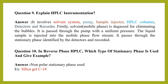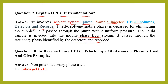Explain HPLC instrumentation. HPLC instrumentation involves a solvent system, a pump, a sample injector, HPLC columns, detectors, and recorders. The solvent is first degassed to eliminate bubbles, then passed through the pump at uniform pressure. The liquid sample is then injected into the mobile phase flow stream, passes through the stationary phase, and is identified by detectors and recorders.